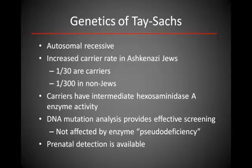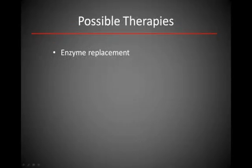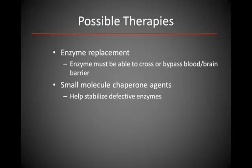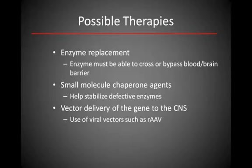Prenatal detection is also possible. Treatment of Tay-Sachs disease has been very challenging. Replacement of the enzyme is problematic because of issues posed by the blood-brain barrier, which prevents passage of the enzyme into the brain. Other possible avenues for therapy involve small molecule chaperone agents, as well as attempts to deliver the hexosaminidase gene to brain cells by use of recombinant adenoviral vectors. Other strategies are likely to emerge over time.